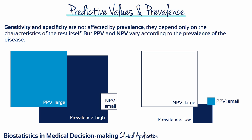Because predictive value is influenced by prevalence, it's not independent of the setting in which the test is used. Positive results, even for a very specific test, when applied to patients with a low likelihood of having the disease, are likely to be false positives.